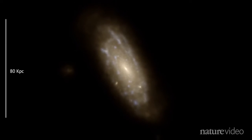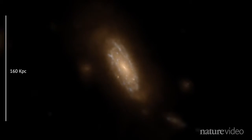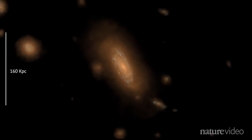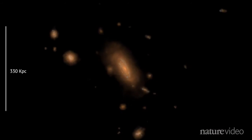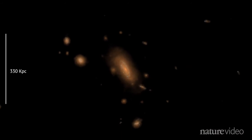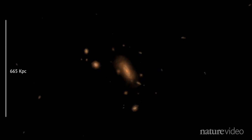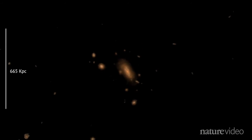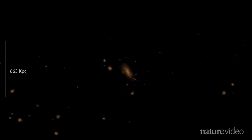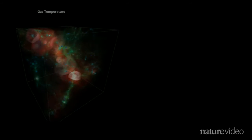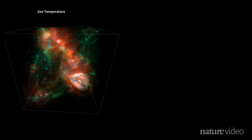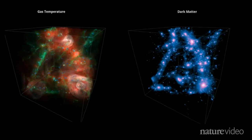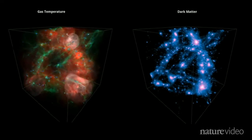The model doesn't just tackle the universe's huge range of scales — it also richly describes the forces at work, much better than previous attempts. By factoring in the laws of physics and a variety of theories about how gases cool, stars evolve, and black holes grow, the model recreates both the galaxies and stars we can see, and the dark matter and dark energy that we can't.